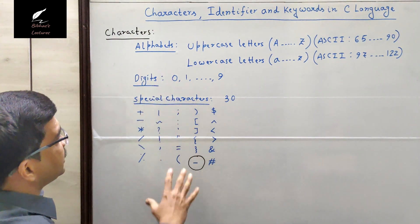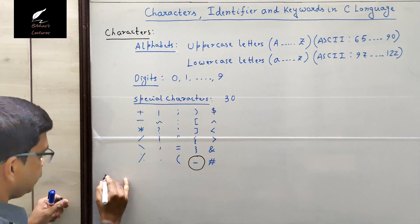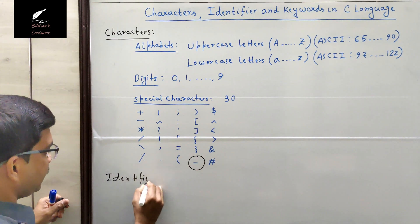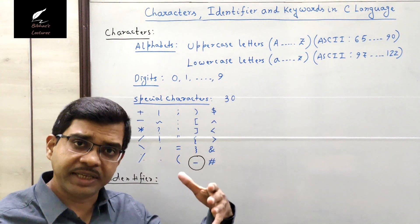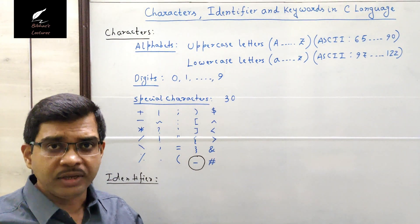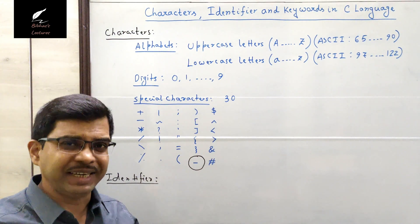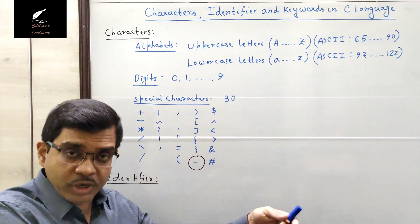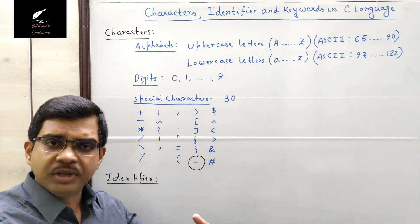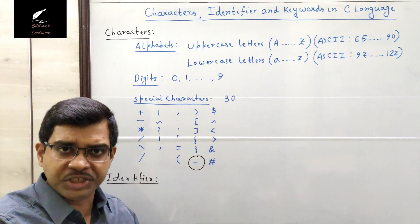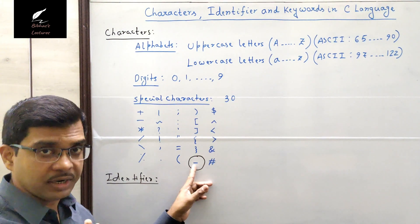So those are the characters available in C language. The next topic is identifiers. What is an identifier? An identifier is nothing but a name — it can be a name of a variable, a name of a function, or a name of any special symbolic constant. It identifies those things. An identifier consists of several characters: letters, digits, and the only special character that can be used is the underscore.